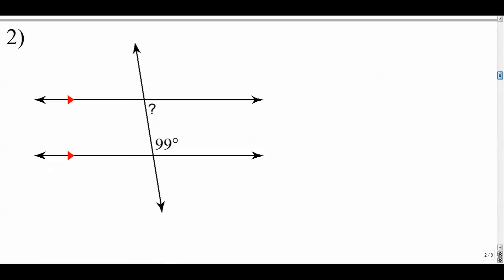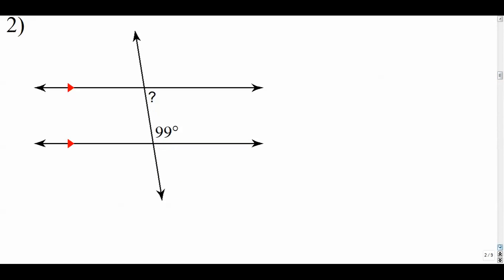Number two. And if you'd like to, you can pause of course and give these a shot before I go through them. We're looking at these two angles right here. They're both interior angles and they are both on the same side of our transversal. We call those same side or consecutive interior angles. Consecutive interior angles sum to 180.